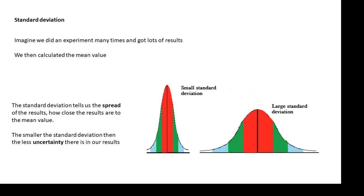The standard deviation. Imagine we did an experiment many times and got lots of results and then calculated the mean. Now the standard deviation tells us the spread of the results, how close the results are to the mean. If you look at these two diagrams, the first one there is a small standard deviation. On the second one there's a much bigger standard deviation. There's a bigger spread of results. The smaller the standard deviation then the less uncertainty there is in our results. If they're closer to the average then we know that they're probably more accurate.